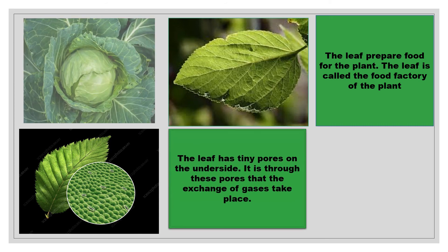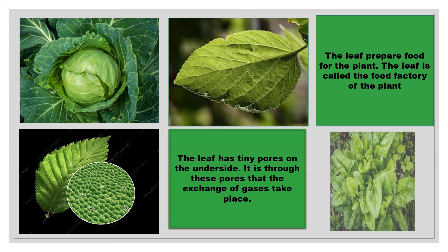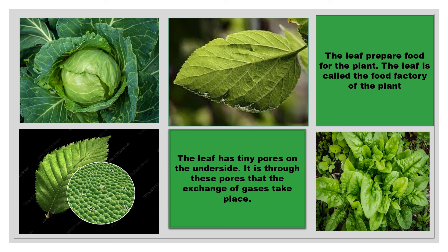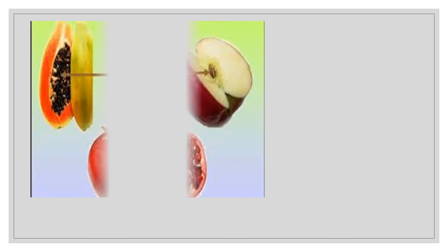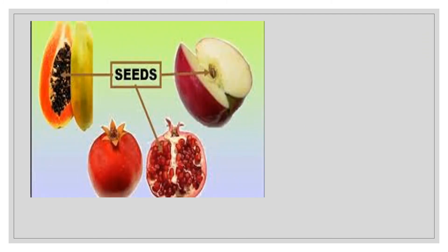The leaves of plants like cabbage and spinach are eaten as vegetables. The flower is the most beautiful part of the plant. It comes in different colors. Flowers change into fruits. Fruits are the juicy, fleshy part of the plant. They bear seeds inside them. Some fruits may have many seeds, while others may have few or just one. Papaya has many seeds, whereas an apple has only a few seeds.